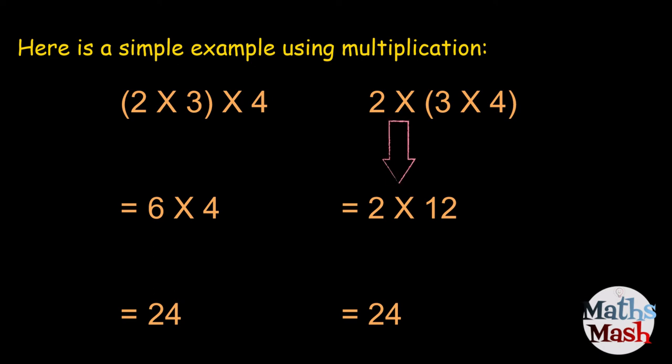And our next example. We copy over the 2 times. And then we say 3 times 4 is 12. So, we have 2 times 12 on our second line. Will give us 24.